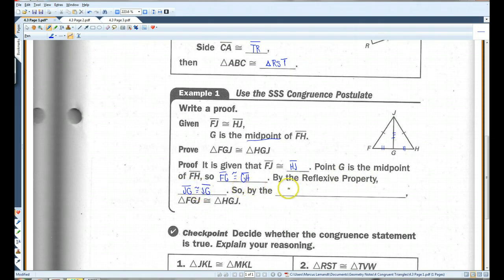So, by the SSS congruence postulate, triangle FGJ is congruent to triangle HGJ.